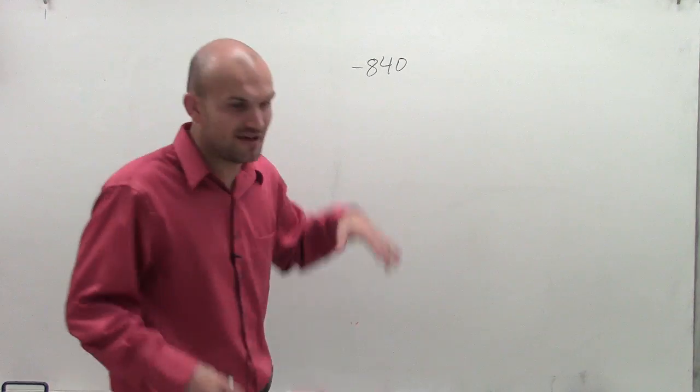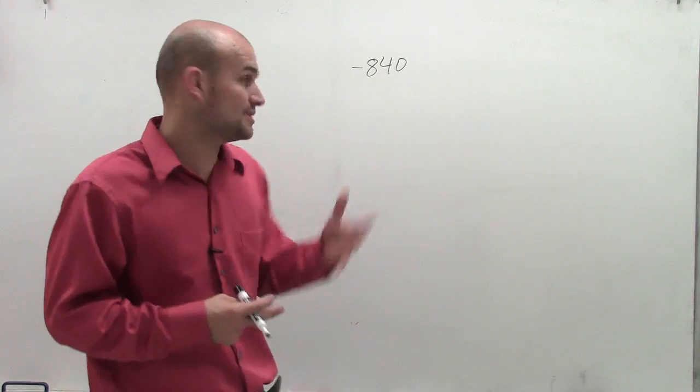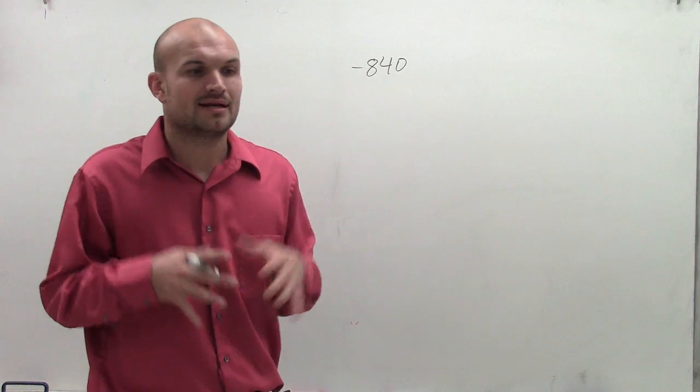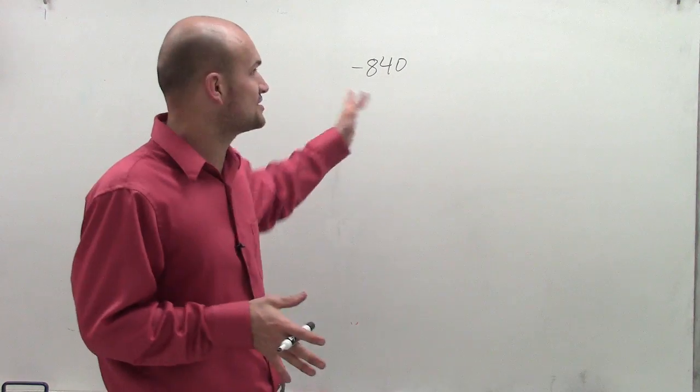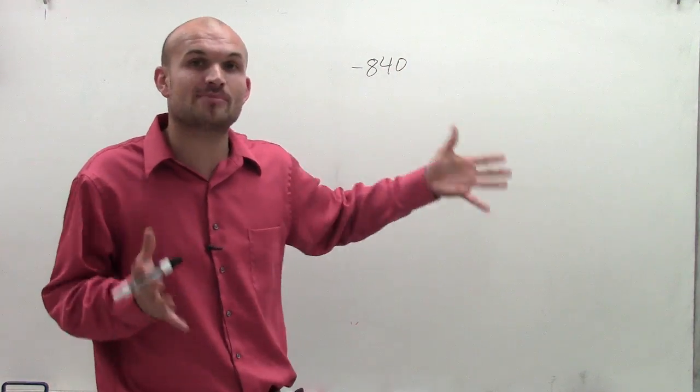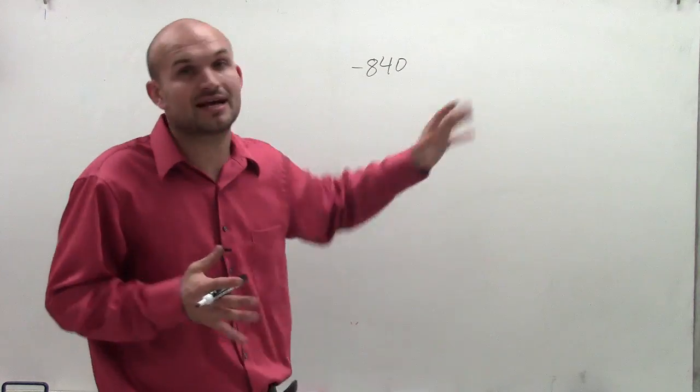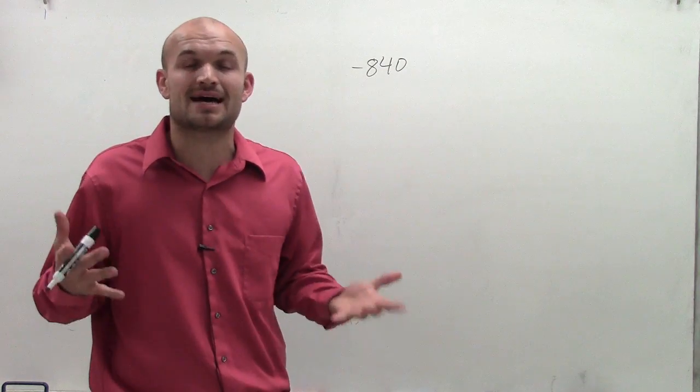So what we want to do is evaluate for sine, cosine, and tangent of negative 840 degrees. Now to do that, what we can simply do is just find the point, the coordinate point, where our terminal side of negative 840 degrees lies on the unit circle.